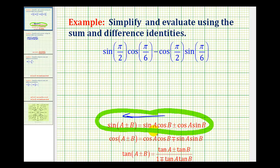Let's write this out. Here we have the sine of angle A times the cosine of angle B. Notice how we have a minus sign, and then we have cosine A times sine B. So A equals π/2, and B equals π/6.